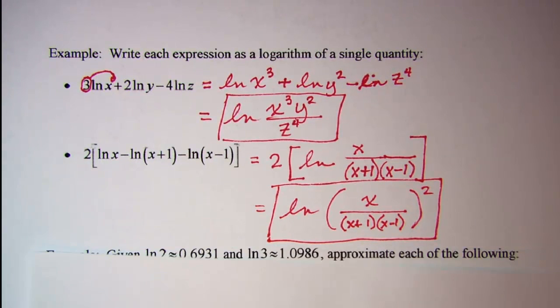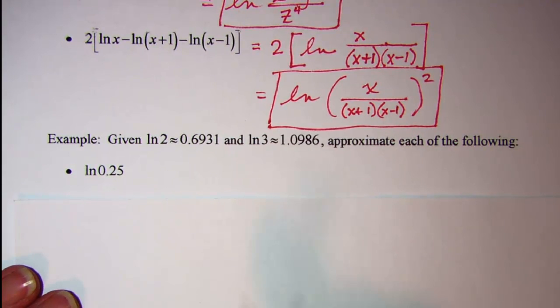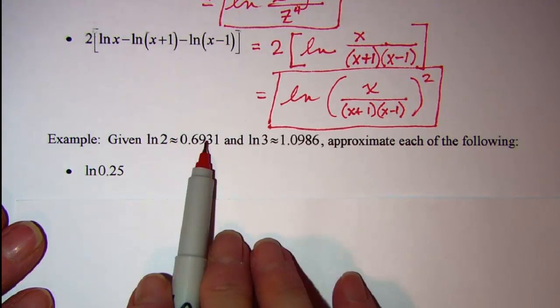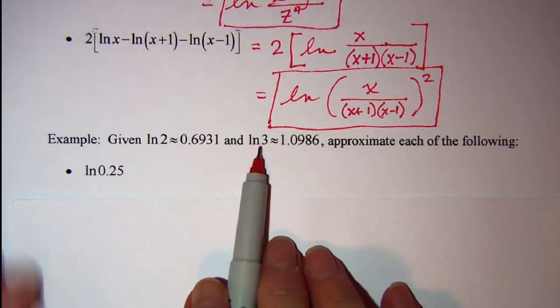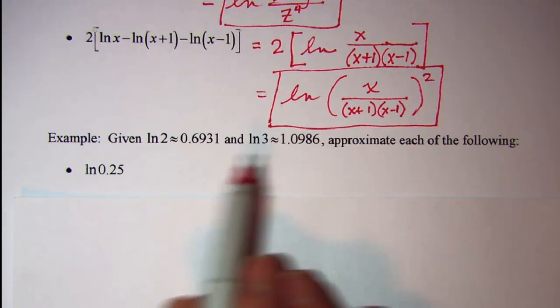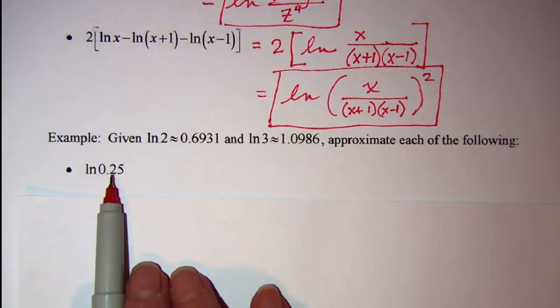We can use our properties of logarithms to rewrite and get approximate values for these logarithms. I'm given that ln of 2 is approximately this number, and the ln of 3 is approximately this 1.0986. So I need to consider how to rewrite this. We have 0.25, but there's a number of ways to rewrite that, so that I can use one of these.